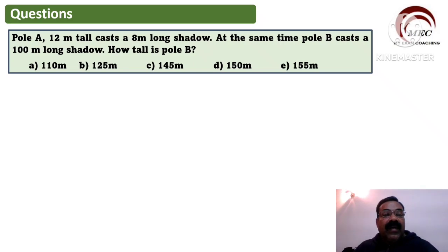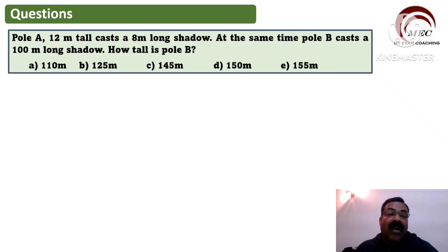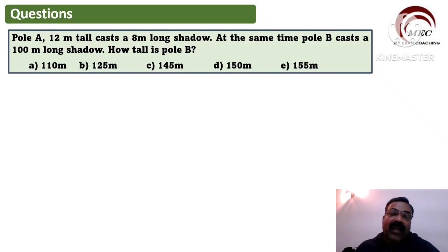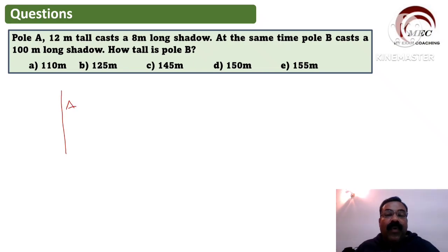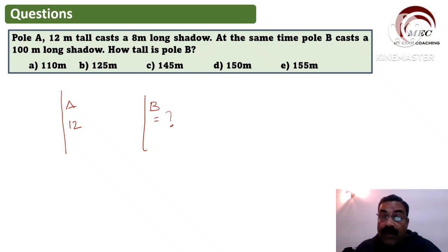Here is your first question. A pole A, 12 meters tall, casts an 8-meter long shadow. At the same time, pole B casts a 100-meter long shadow. How tall is pole B? Now let us understand this concept very clearly. This question can be solved in two different ways — with a ratio or with trigonometry. Since no angle is given here, let us do it with the ratio. Pole A is 12 meters and pole B is what we need to find out.